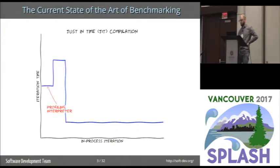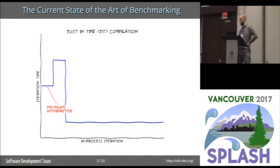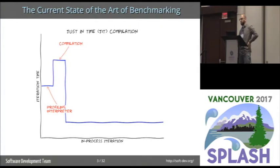There are distinct phases through which the VM travels as it executes the benchmark. In the beginning, the VM may be in its profiling interpreter mode, where we are interpreting slowly the user's program, but also trying to figure out which parts of the code are frequently executed and which types we commonly encounter. That information is then fed into the next phase, which is the compilation phase. And then, finally, we should end up in the steady state of peak performance.